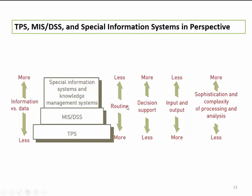Looking at routine operations: TPS will have more routine operations, whereas more sophisticated systems have fewer. Regarding decision support, fewer decisions are taken at the TPS level because it's mainly for data capturing and gathering, whereas more specialized systems involve more decisions. For inputs versus outputs, TPS has many more, while specialized systems mainly focus on outputs rather than inputs. In terms of sophistication, TPS systems at the bottom of the pyramid are less sophisticated, whereas more complex and specialized systems require much greater sophistication.